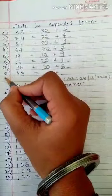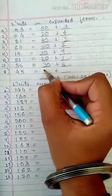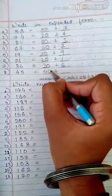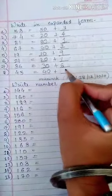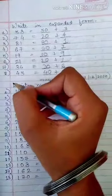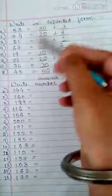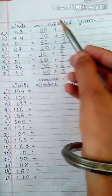Question number 8, 45 is equal to 40 plus 5. So, that's how you have to complete write in expanded form.